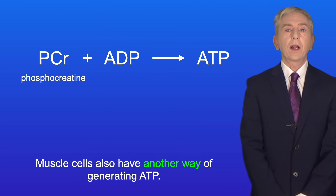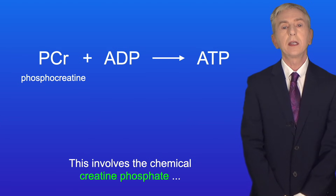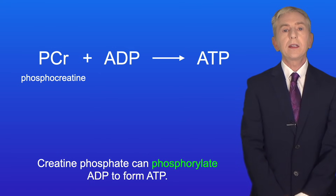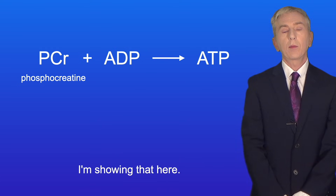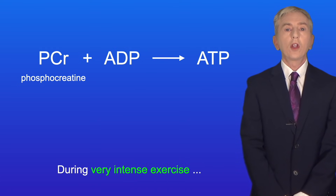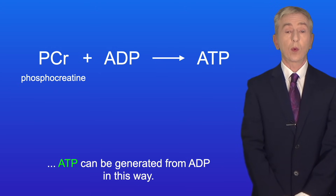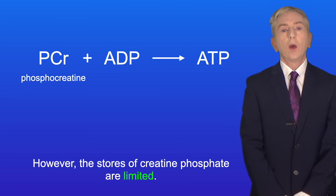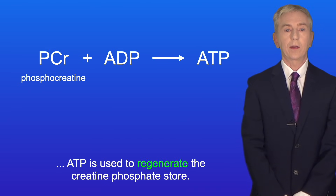Muscle cells also have another way of generating ATP. This involves the chemical creatine phosphate — also called phosphocreatine — which is stored in muscles. Creatine phosphate can phosphorylate ADP to form ATP, as shown here. So during very intense exercise, ATP can be generated from ADP in this way. However, the stores of creatine phosphate are limited. Once the muscle has stopped contracting, ATP is used to regenerate the creatine phosphate store.